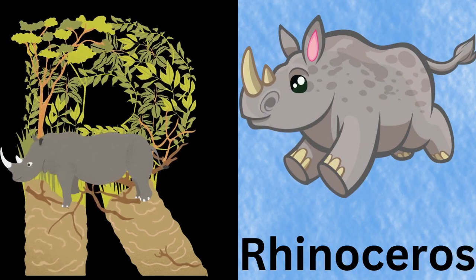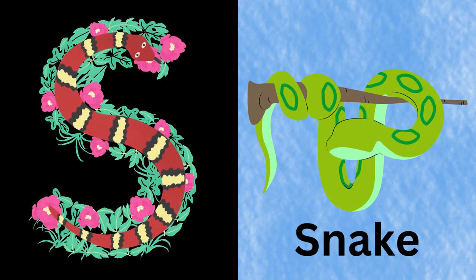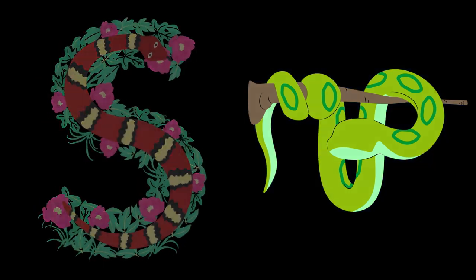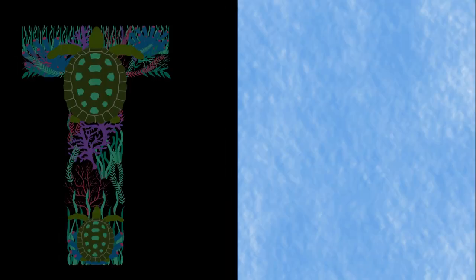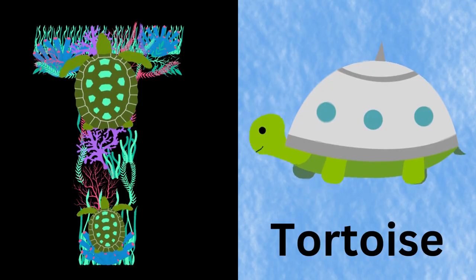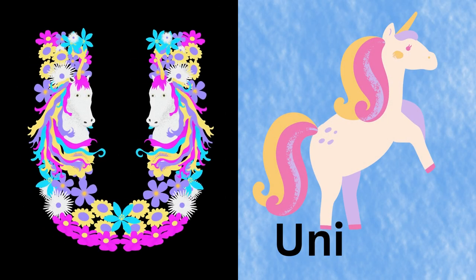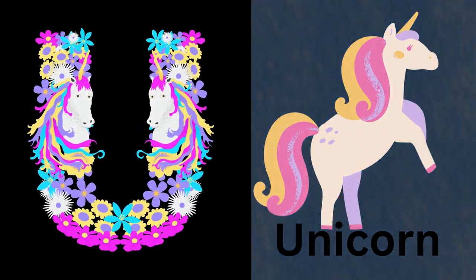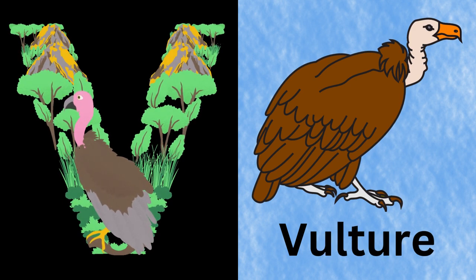R for Rhinoceros. S for Snake. T for Tortoise. U for Unicorn. V for Vulture.